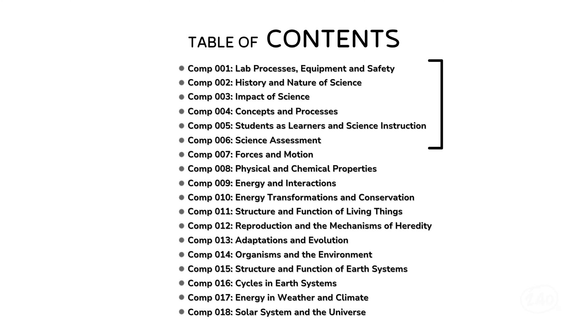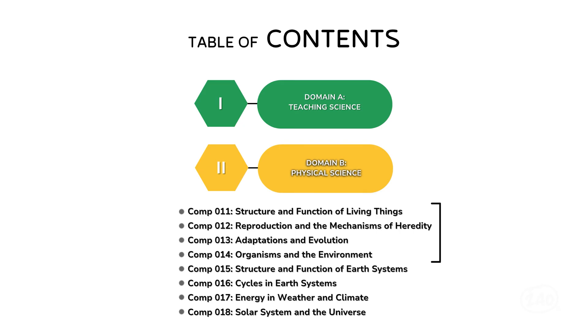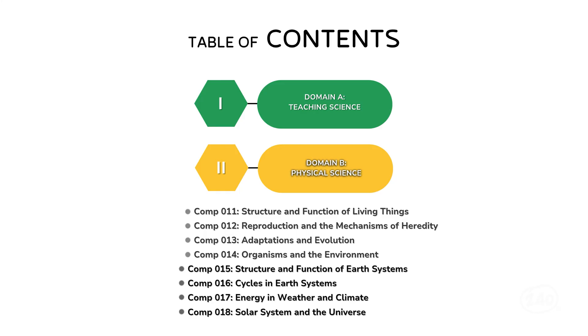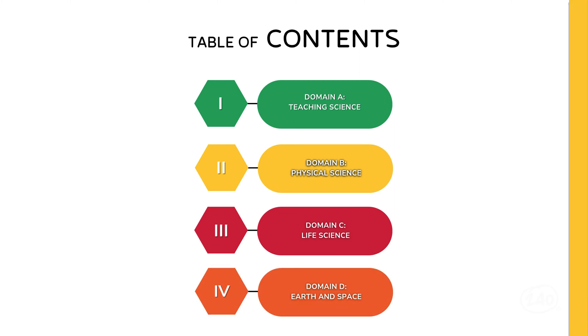Competencies 1 through 6 relate to science instruction and general overarching science concepts — let's group these and call them Domain A: Teaching Science. Competencies 7 through 10 include forces in motion, physical and chemical properties, and two on energy — let's call this Domain B: Physical Science. Competencies 11 through 14 cover living organisms, so let's call those Life Science. And finally, competencies 15 through 18 relate to Earth and Space. Each of these domains contains an entire section of science education, but we'll break it down piece by piece.